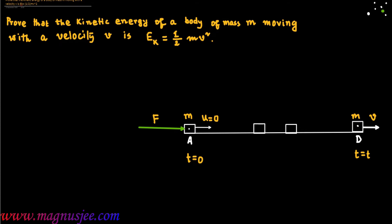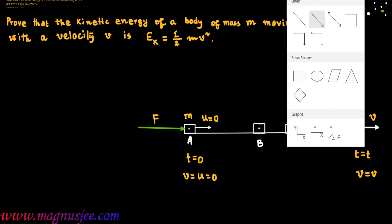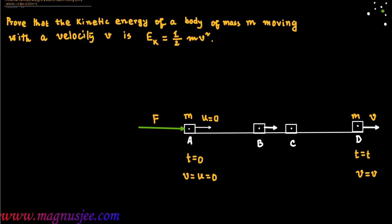At A, time t was 0 and at D, t equal to t. That means after time t, the body will reach the point D. At A, velocity u equal to 0 and at D, v equal to v. Before reaching the point D, the body will cross two intermediate points B and C. At the point B, the body has a velocity v and the displacement from B to C is a small displacement dS, because the two points B and C are very close to each other.